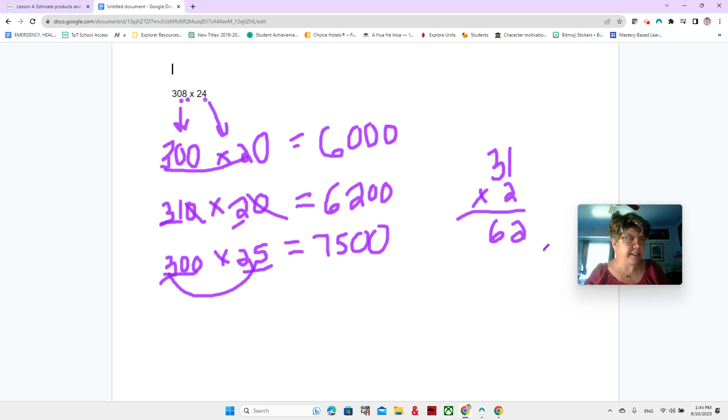Now, do we think our estimates are less than or greater than the actual answer? Let's look at each of them. These two, we both rounded down. So these are probably less than the actual answer. Let's look at these two. This one we rounded up. This one we rounded down. So this one might be not sure. This one we rounded down, but this one we rounded up. So that one might be greater than, it's bigger than our other two. And the actual answer is 7,392.